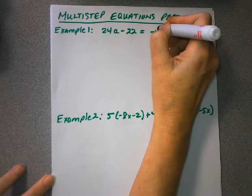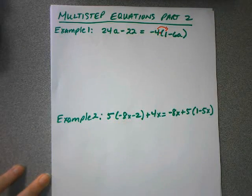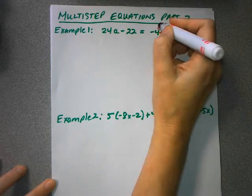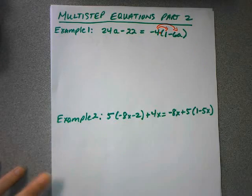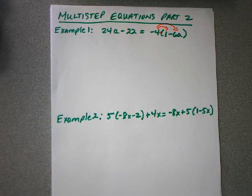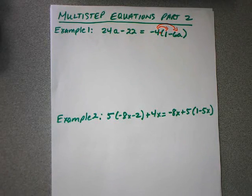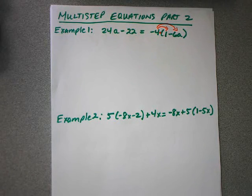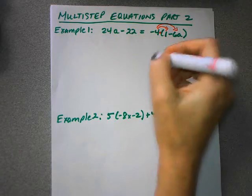For instance, in example 1, we are going to be multiplying the negative 4 times a positive 1, and we are multiplying the negative 4 times a negative 6a. So we need to get rid of the parentheses before we start doing anything else. Here we go. We are going to distribute.